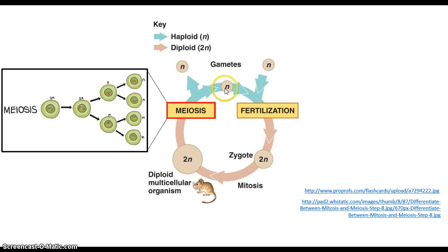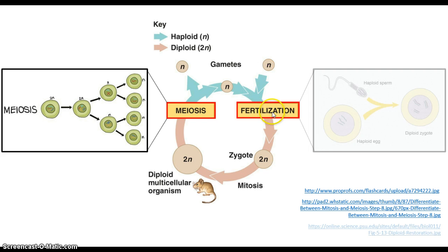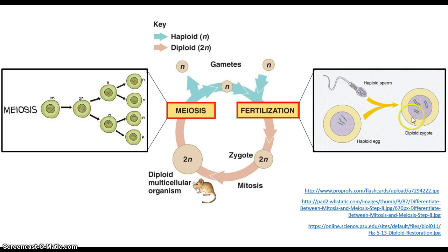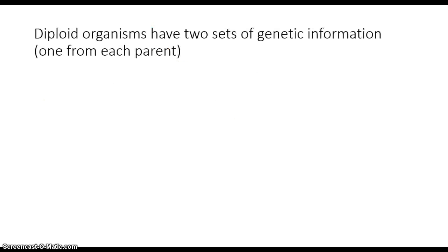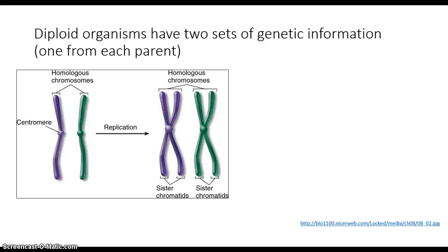When these gametes from one organism combine with those from another after sex and fertilization, you get a diploid number restored in the zygote. Diploid organisms have two sets of DNA. We can look at these chromosomes by length, and when we arrange them by length we find that chromosomes tend to come in pairs — we refer to these pairs as homologous chromosomes. When these homologous chromosomes go through DNA replication before the cells divide, they take on this familiar X shape made of two identical sister chromatids joined at the centromere.